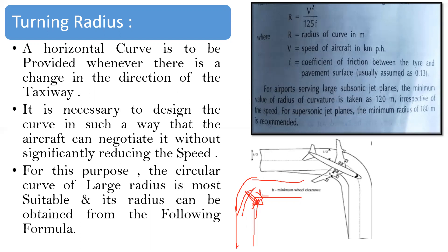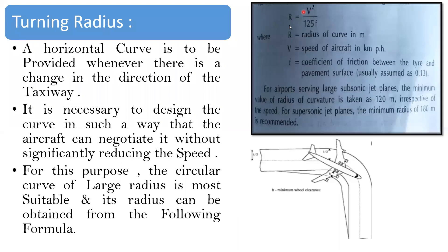As shown in the figure, one path changes to another direction, and a curve is provided with a large radius so the aircraft can take the turn without significantly reducing speed. The formula is: r = v² / (125 × f), where r is the radius of the curve in meters, v is the speed of the aircraft in kilometers per hour, and f is the coefficient of friction between the tire and the pavement surface, usually taken as 0.13.